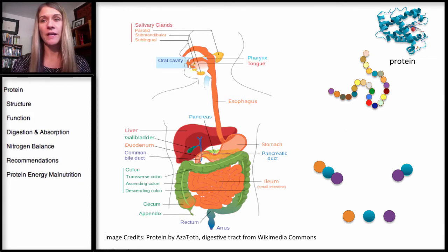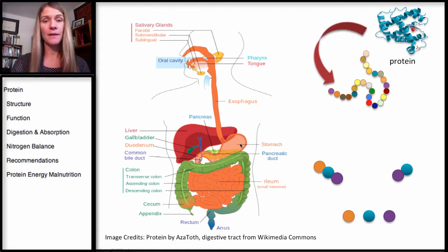We're going to start with protein. And remember, this is our very complex protein structure, foiled and folded on itself. Once the protein goes into the stomach, there is a very low pH, as I mentioned before. pH of 2 is necessary to unfold that protein.